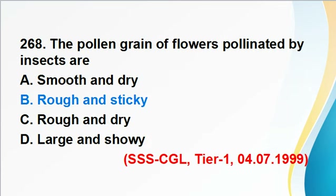Question 268: The pollen grains of flowers pollinated by insects are rough and sticky. Answer B is correct. Pollen grains are large, sticky, heavy, and rough so that they can easily cling onto insect bodies for pollination.